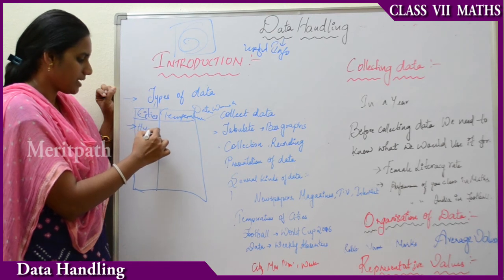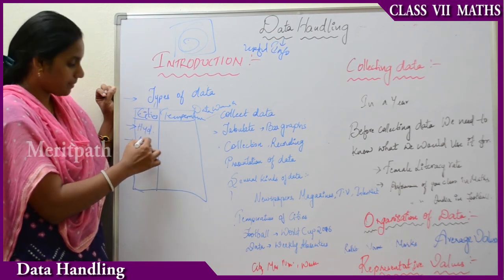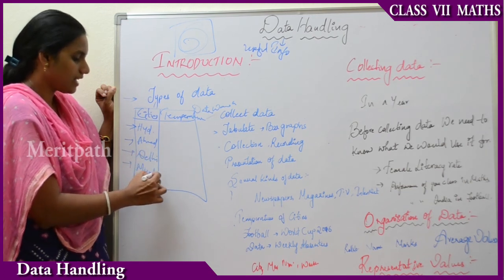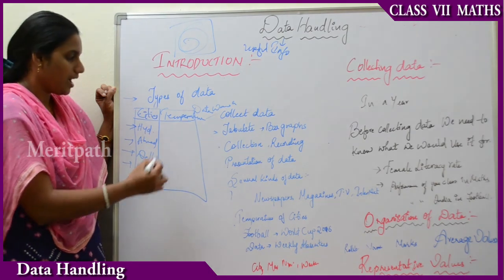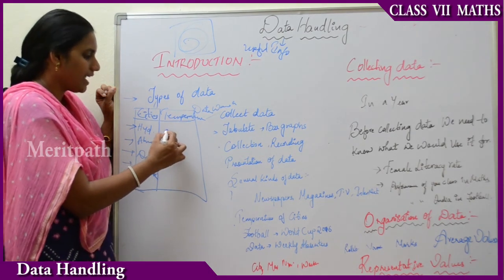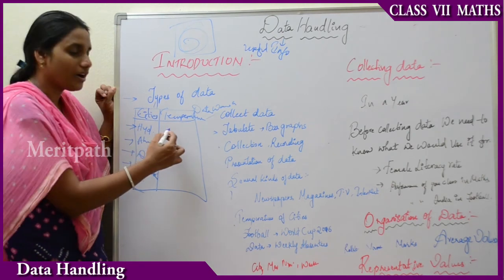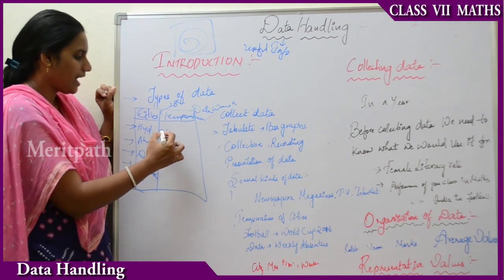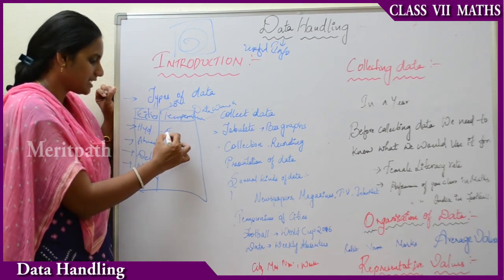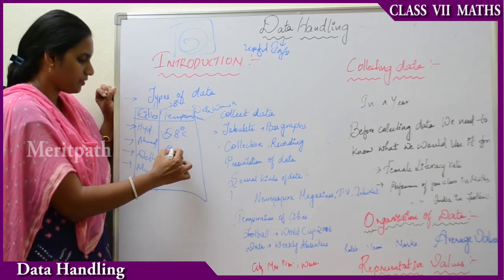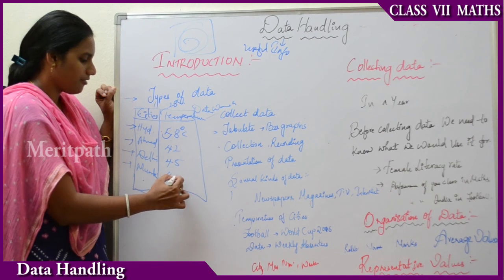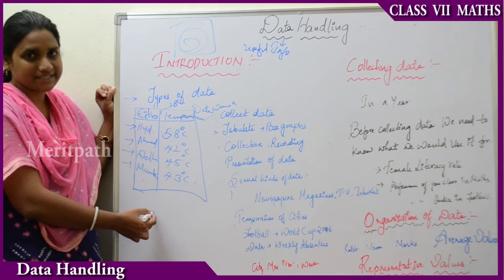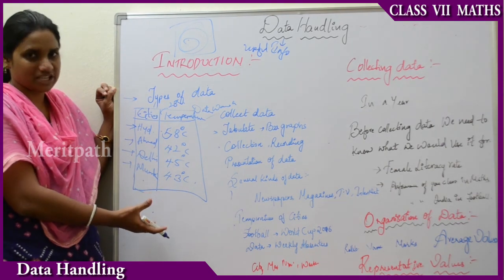First let us take Hyderabad, next Namalaba, next Delhi, and next Pompeii. I have taken around four cities. Now I will be writing the temperatures per day. I have recorded the temperatures of that particular day, that is 28th of 2016. The values are around 50, 42, and 45 degrees. I have recorded the temperatures of different cities. This is one type of information we are getting.